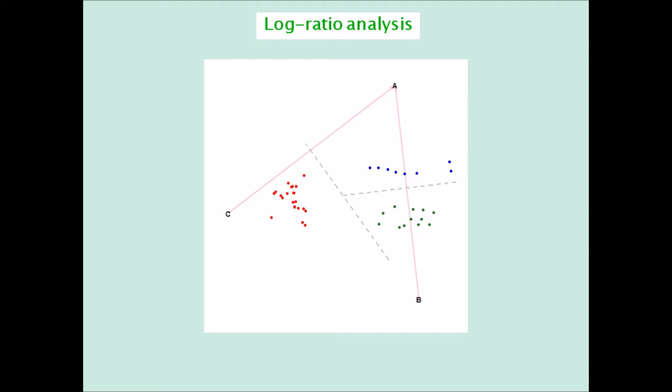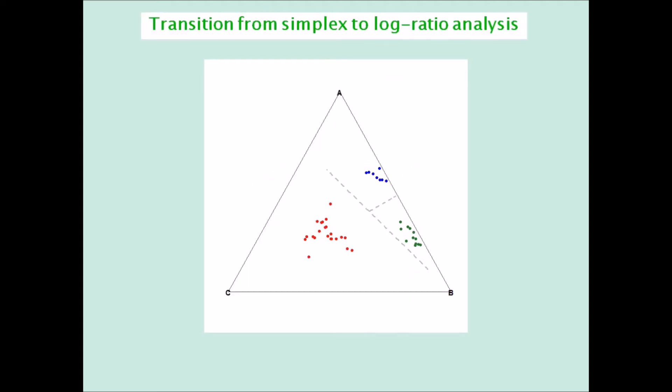Some animations will illustrate even better the relationship between these three versions of essentially the same result. First, the transition from the simplex to the log ratio biplot, which takes the points in the simplex out into real vector space.